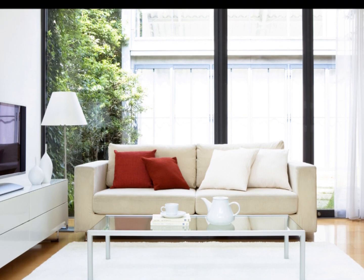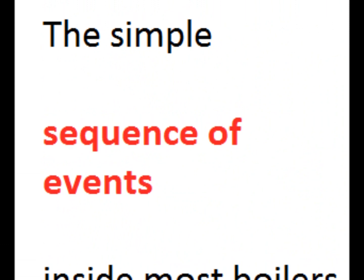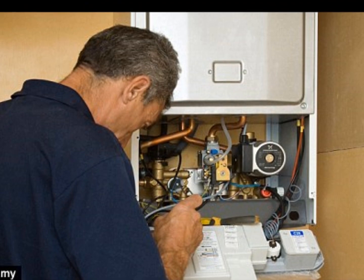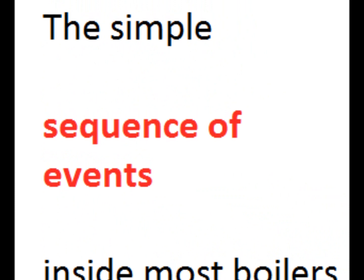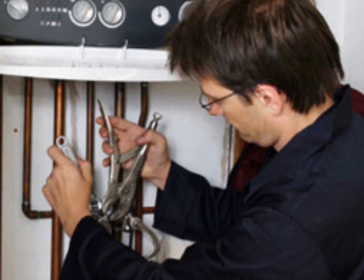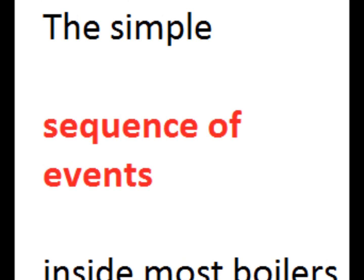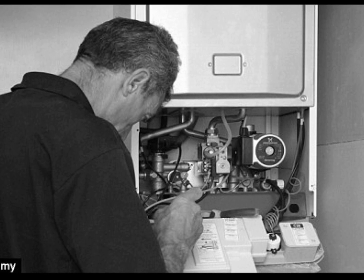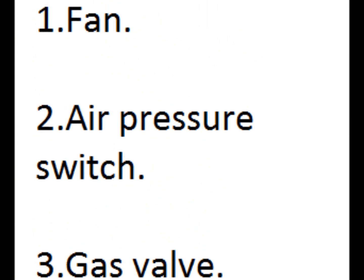This time out we've got a real special one — it's all about the boiler sequence, the sequence of events, what comes next. Obviously, if you can tell the future of what comes next, you'll know how to repair it. For example, if I know after the fan comes the air pressure switch, after that comes this, then I know before that it should be that. It's as simple as that. What is the correct sequence of events? If you know this sequence, essentially you can repair any boiler.